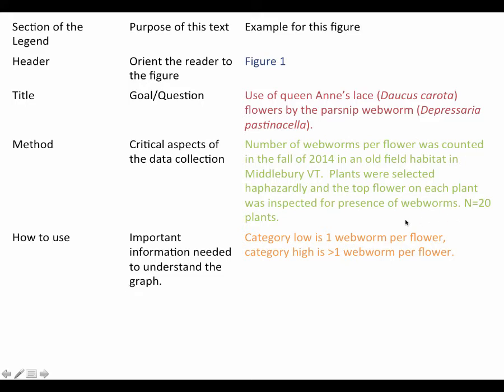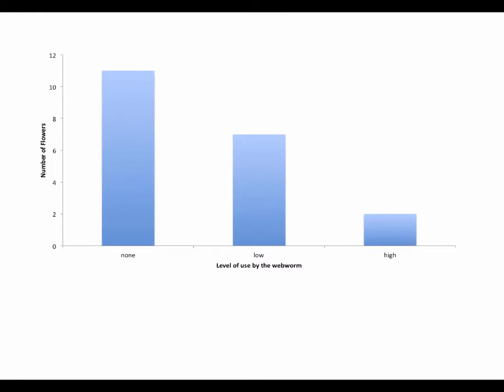The last part of the figure legend is how to use or read the figure — important information needed to understand the graph. In this case I need to define the categories low and high for the reader. Category low is one webworm per flower; category high is greater than one webworm per flower, so that the reader has an understanding of what these words mean. If I changed my x-axis to show zero, one, and greater than one, I wouldn't need to include that kind of information.